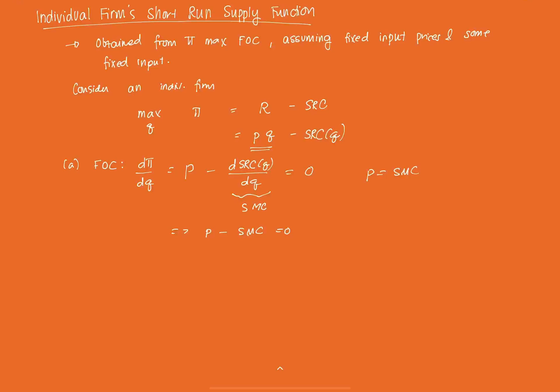So, since the short-run marginal cost is some function of Q, we can solve for the first-order condition for a Q. So, we can solve for the value of, so equating these two, and we know that this is some function of Q, we can get, if we solve, some value of Q star, which is the amount that the firm will produce if it wants to maximize profits in the short-run, which is some function of P.